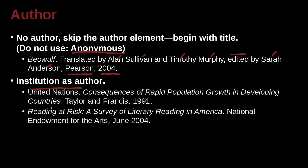Here's another example: 'Reading at Risk: A Survey of Literary Reading in America.' National Endowment of the Arts, comma, June 2004. What happened here? We have nothing at the beginning — we don't even have an organization name at the beginning. Why? Because this is truly anonymous; we don't know who wrote this. However, it was published by the National Endowment of the Arts, which is a government organization. So in that case, we skip the author and just begin with the title of the book or publication.